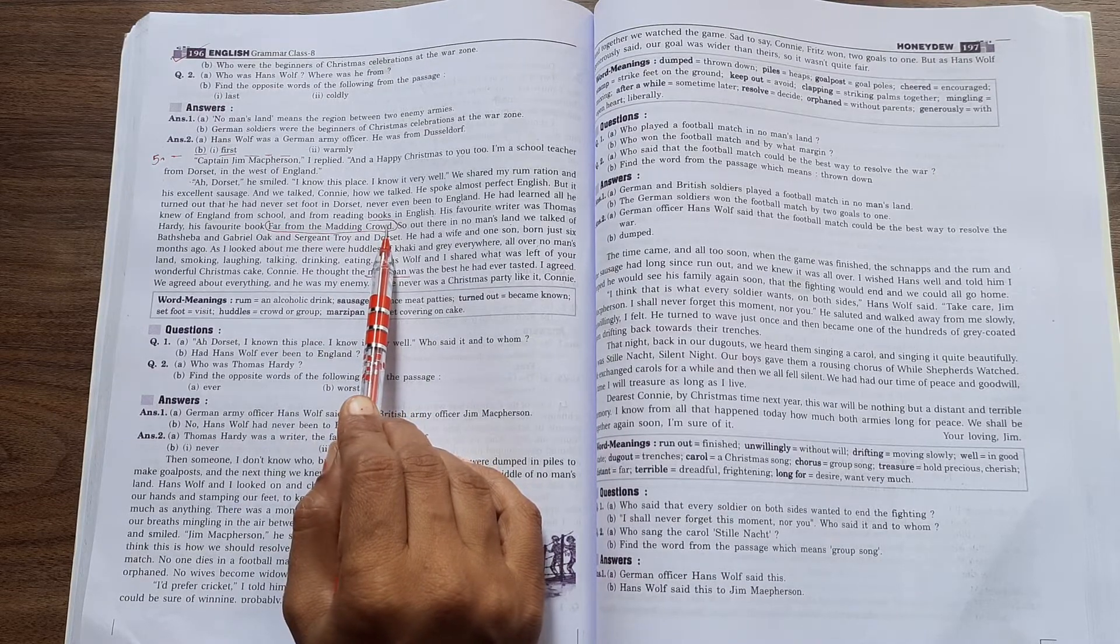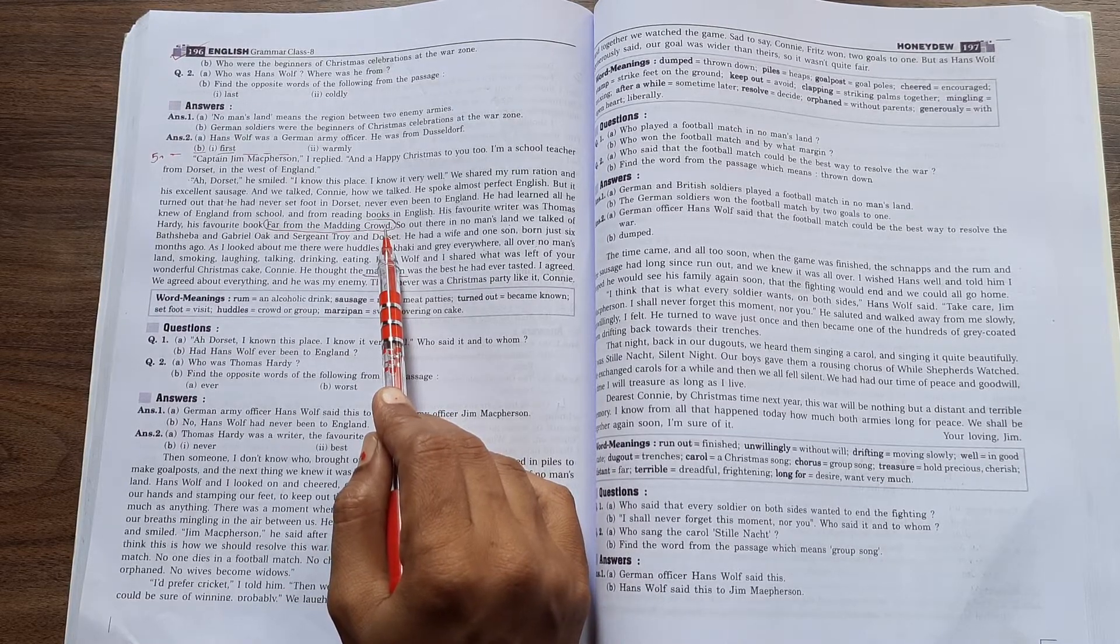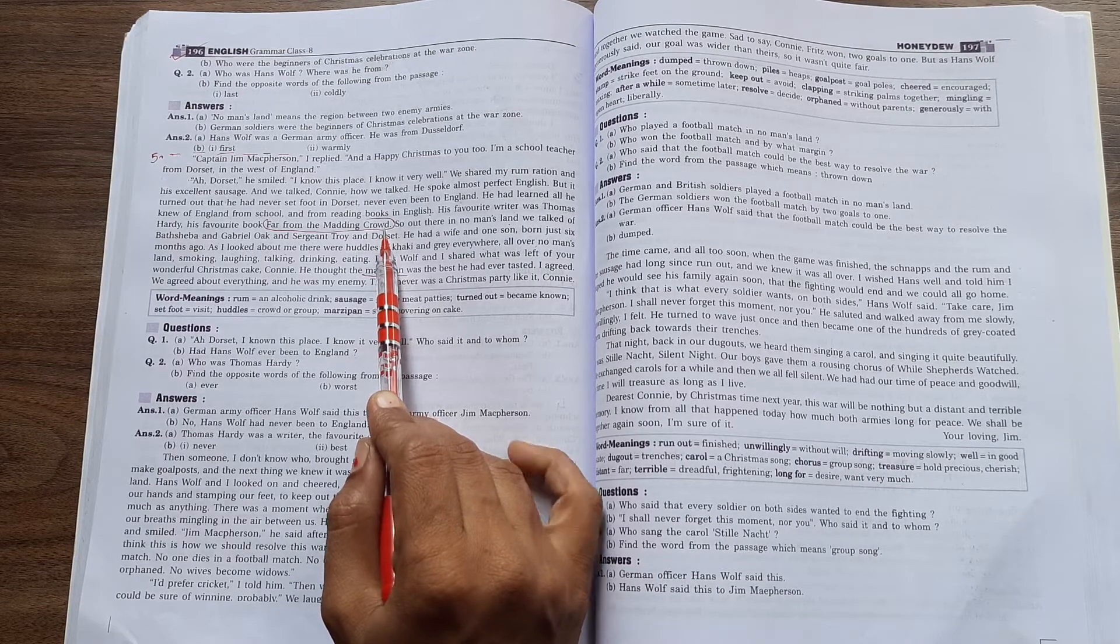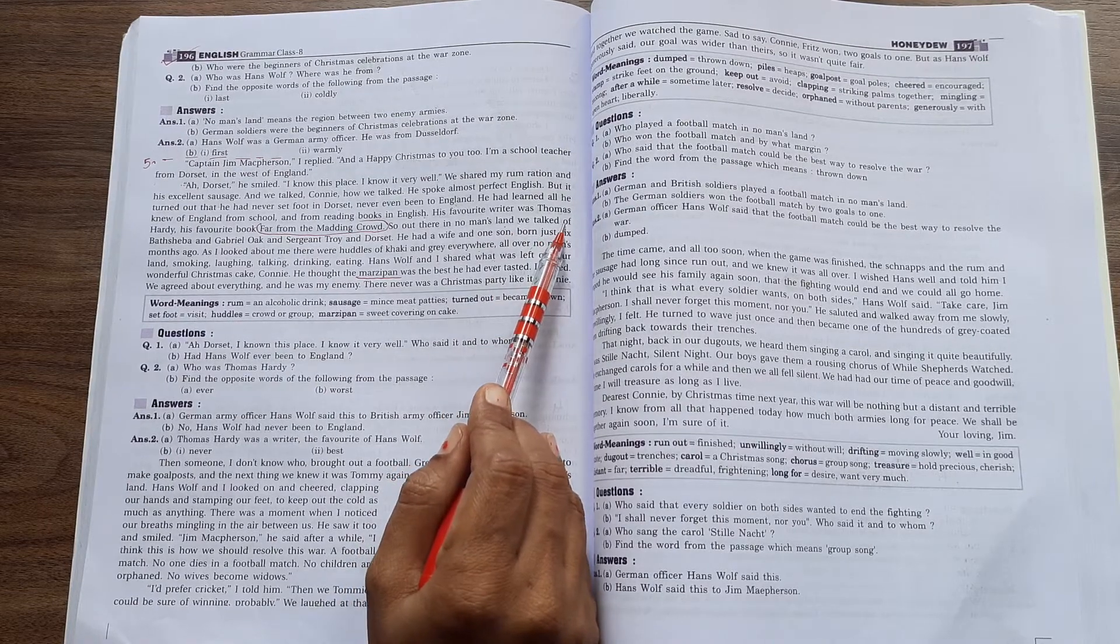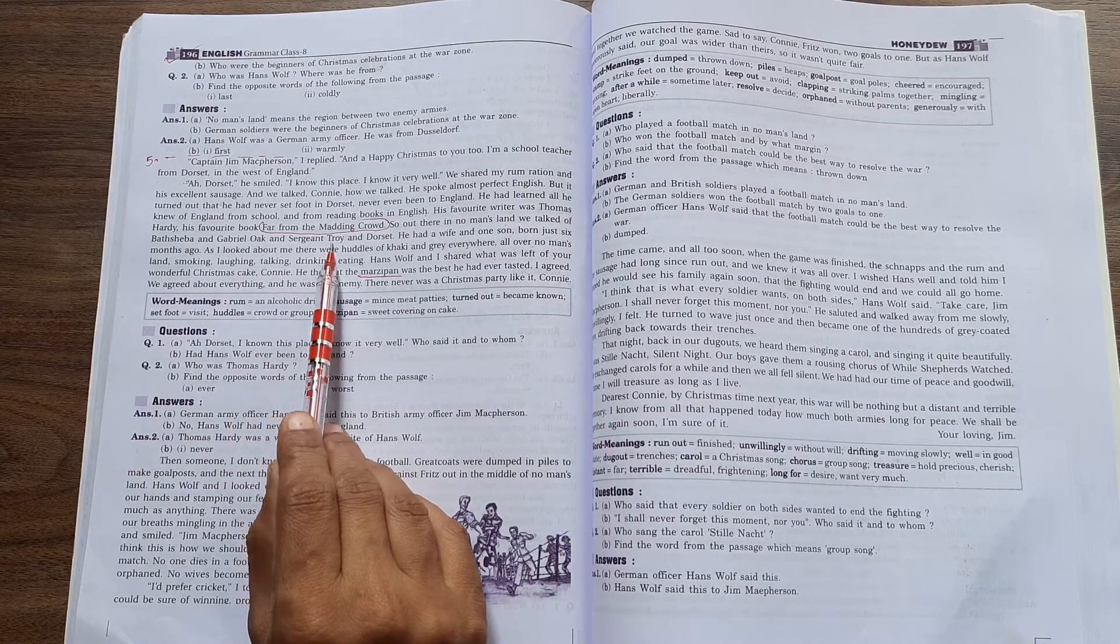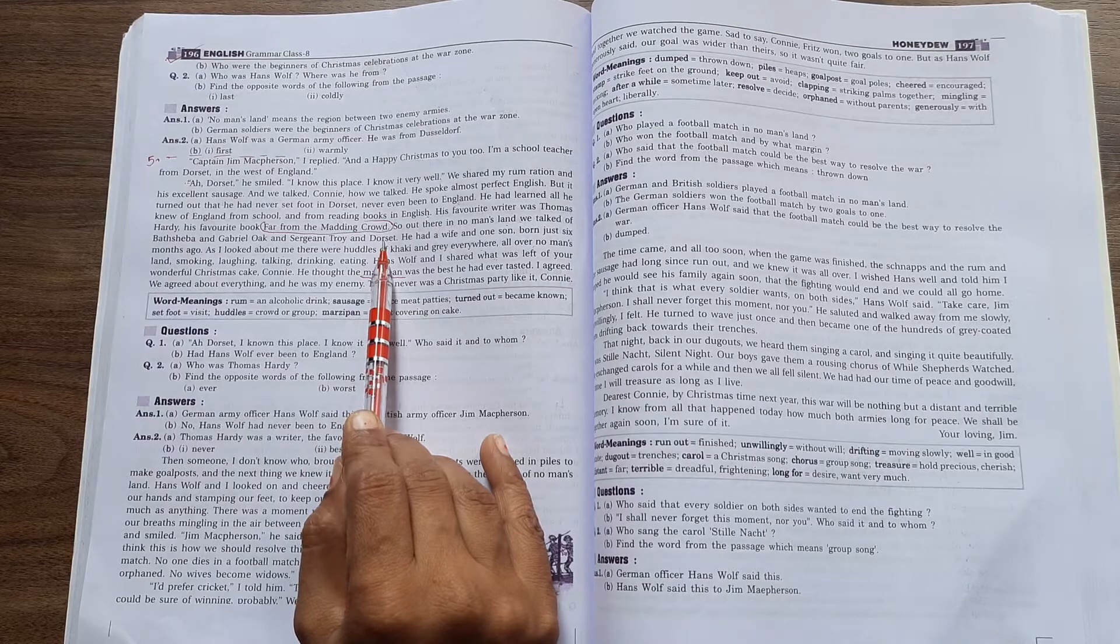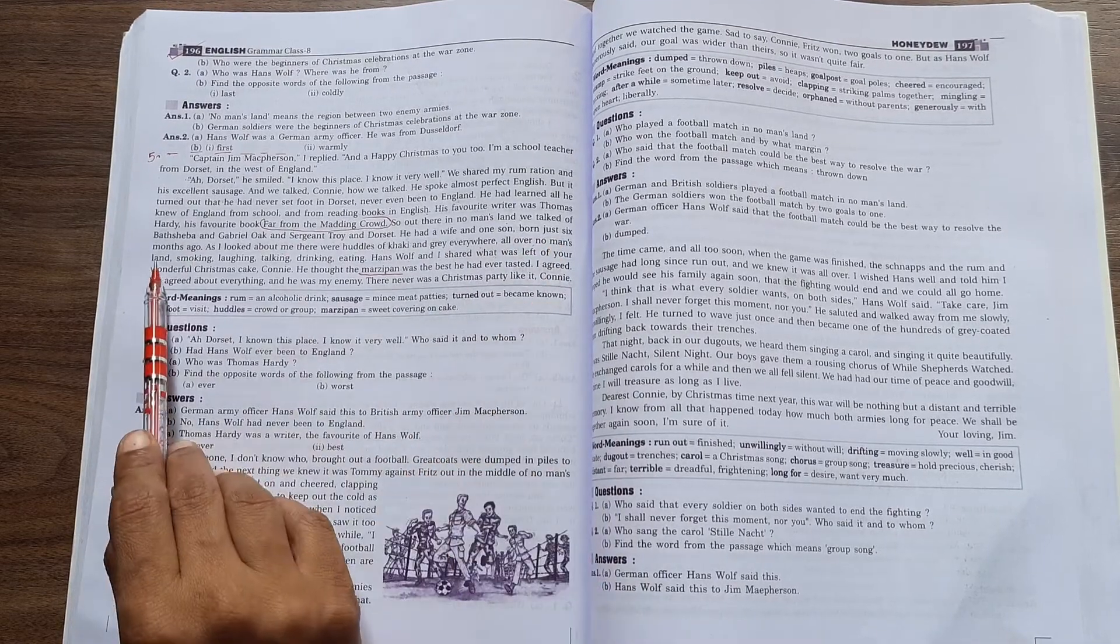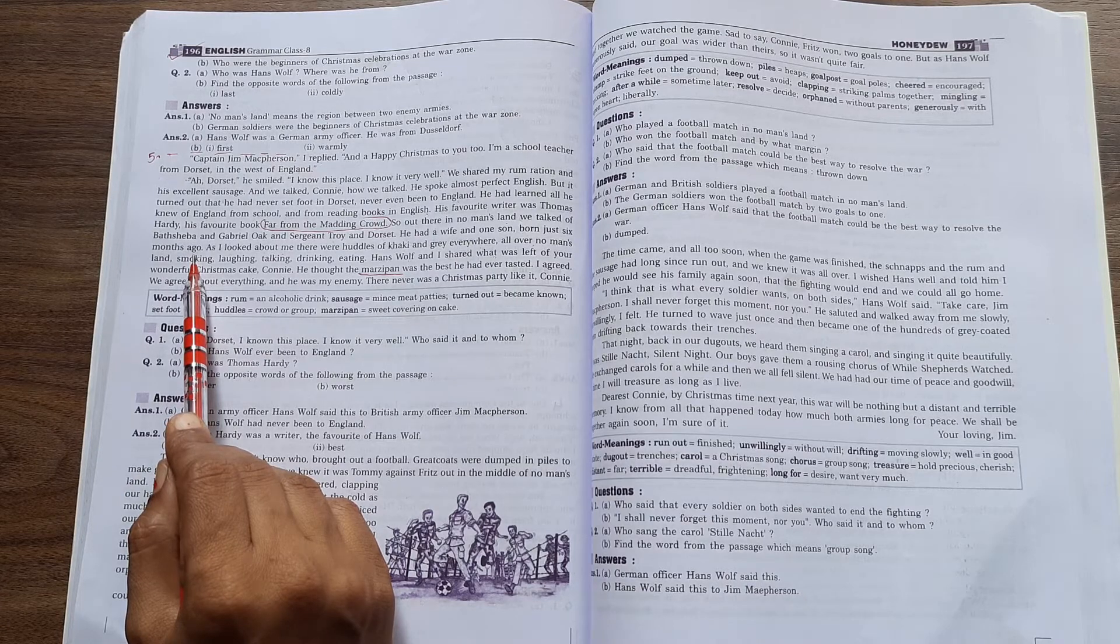Thomas Hardy was his favorite writer and his favorite book was 'Far from the Madding Crowd.' So out there in no man's land, we talked of Bathsheba and Gabriel Oak and Sergeant Troy and Dorset. We were talking about these characters while crossing no man's land. He had a wife and one son born just six months ago. He shared his personal life with me.